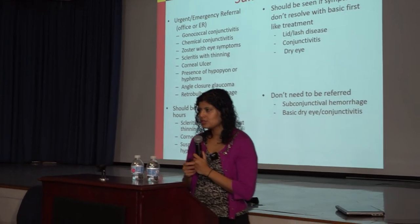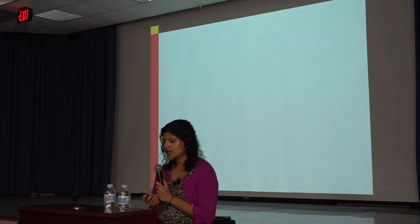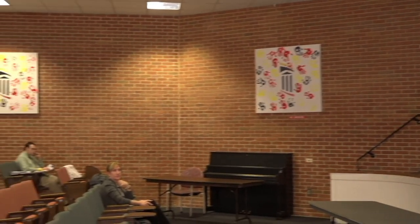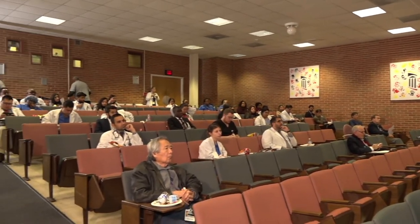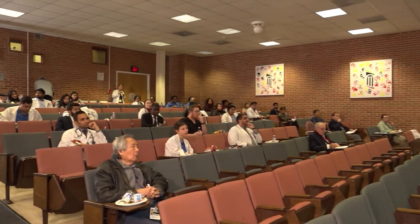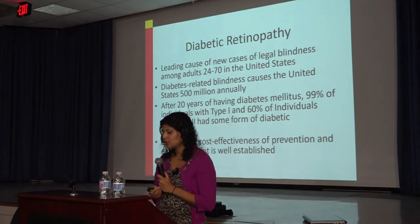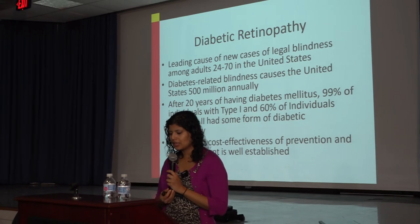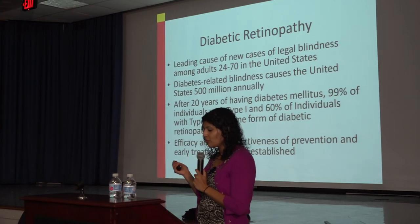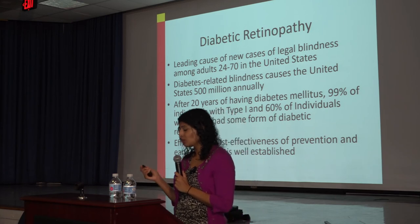We're close to the end of the scheduled content. With the growing epidemic of diabetes, let's briefly discuss diabetic retinopathy. It has become the leading cause of legal blindness in the United States, affecting age groups from 24 to 70, costing approximately $500 million annually — a number that is only going to increase.